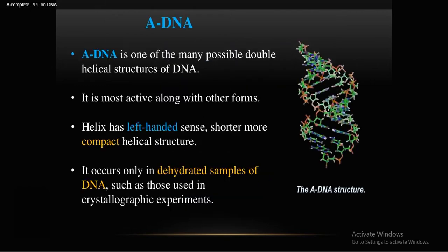What is A-DNA? As you can see in this diagram, A-DNA is one of the many possible double helical structures of DNA and is most active along with the other forms. It is mainly a left-handed helix — shorter and more compact in structure.